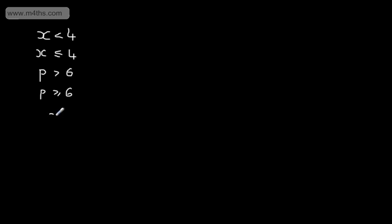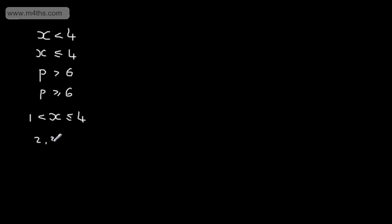Let's look at another one. We might have x is going to be strictly greater than 1 and in turn less than or equal to 4. We can choose numbers between 1 and 4. We can't include 1, but we could include 4. So if we were asked to state all of the whole numbers — integers — that satisfy this inequality, we'd have 2, 3, and 4. If we change this and had 1 included, we could add 1 to the list.